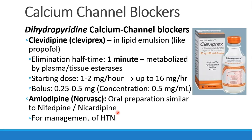Clevidipine, or Cleviprex, is in a lipid emulsion, so it looks like propofol if it's not labeled. It has an elimination half-time of just one minute because instead of going to the liver, it's metabolized by plasma or tissue esterases — very rapid metabolism. The starting dose is 1 to 2 milligrams per hour, and you can titrate up to about 16 milligrams per hour, usually without a loading dose given how fast-acting it is. Some people do give a bolus of 0.25 to 0.5 milligrams; the concentration is 0.5 milligrams per mL, so we're talking about 1 mL or less as your bolus dose.